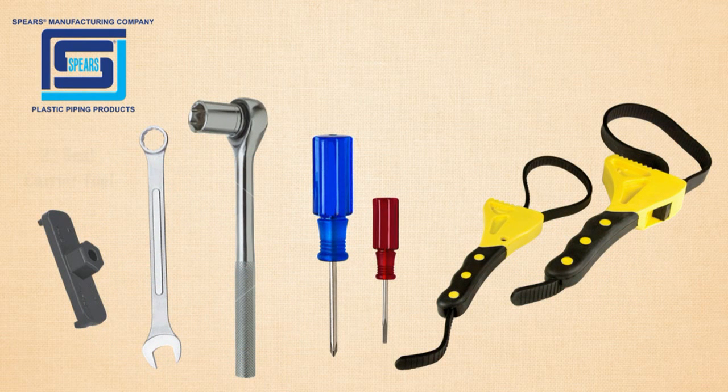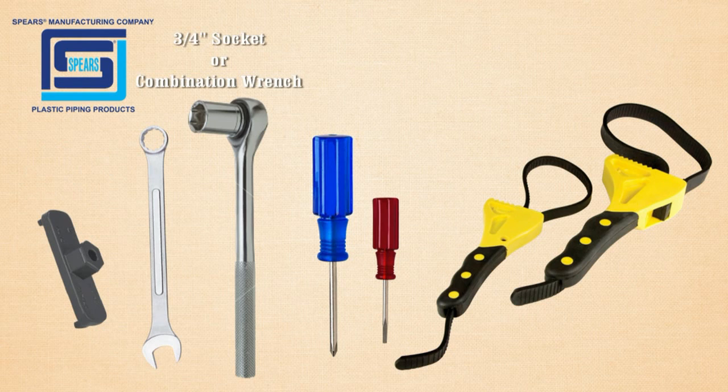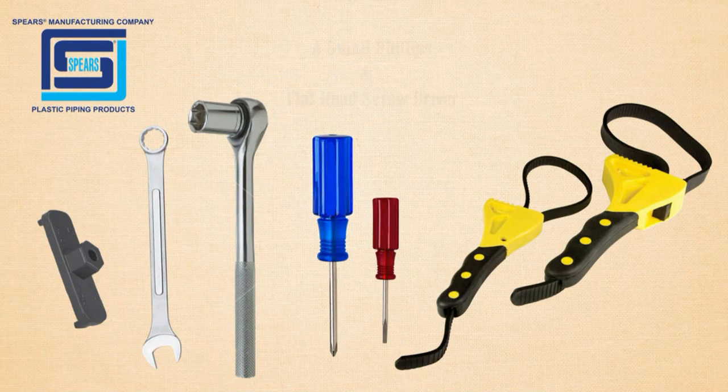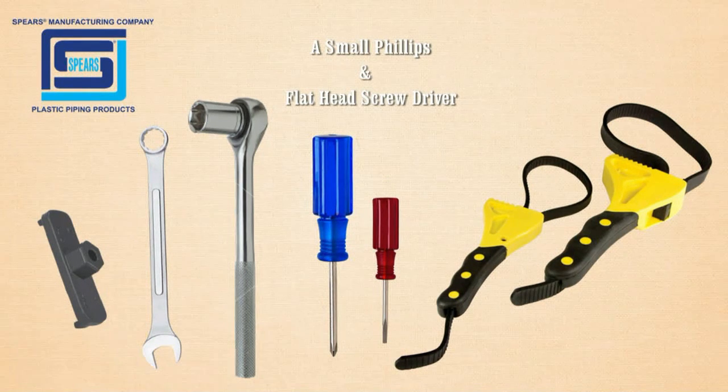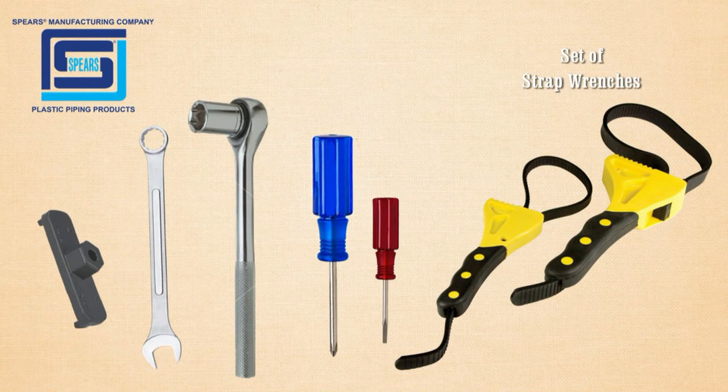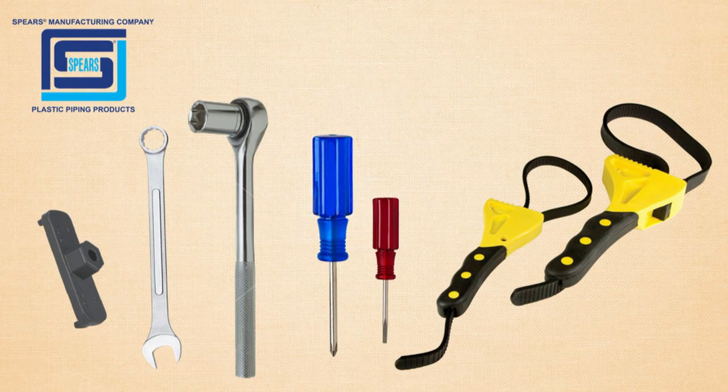The tools needed are a two inch seal carrier tool, a three quarter inch socket or combination wrench, a small Phillips and flathead screwdriver, and a set of strap wrenches. You will also need to prepare a mild soap and water solution for lubrication during reassembly.